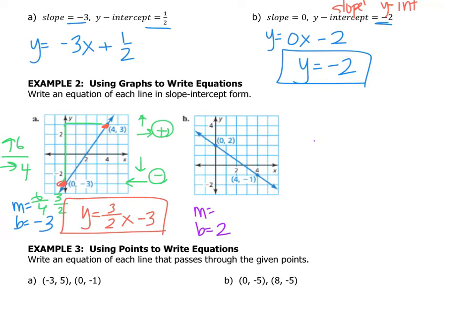And the slope from 0, 2 to 4, negative 1, I go down 4, so that's negative, nope, down 3, and then I go to the right 4, which is positive. So the slope would be negative 3 fourths. That doesn't need to get reduced, or it can't get reduced technically. So the formula is y equals negative 3 fourths x plus 2.